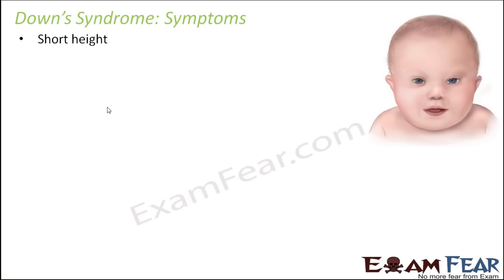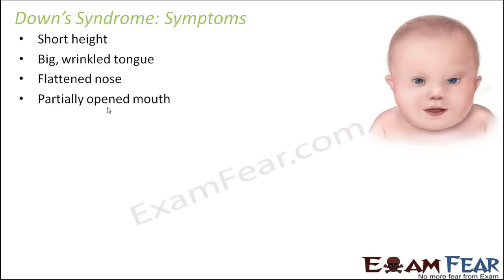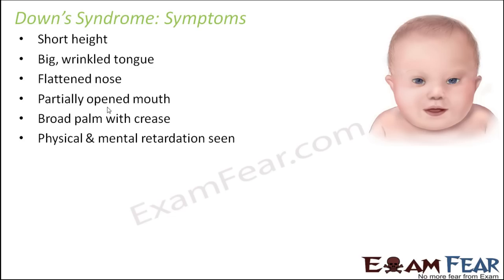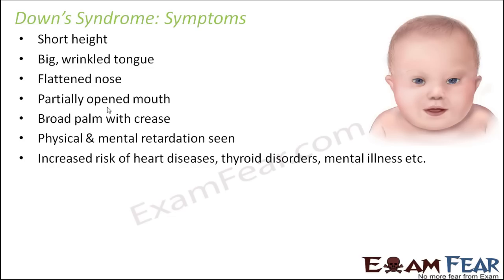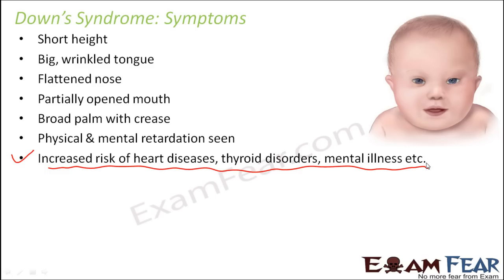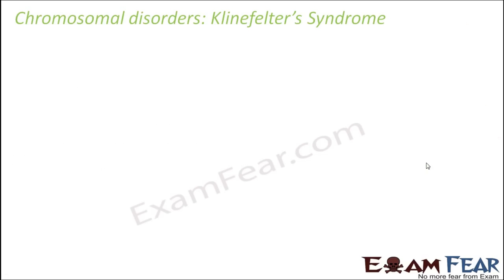Some of the symptoms of Down syndrome are: the individual generally has a short height, a big wrinkled tongue, and very different facial features — including a flattened nose, partially open mouth, and broad palm with a lot of creases. Physical and mental retardation is also seen, along with increased risk of heart diseases, thyroid disorders, and mental illness. Therefore their health may be affected at a very early age.